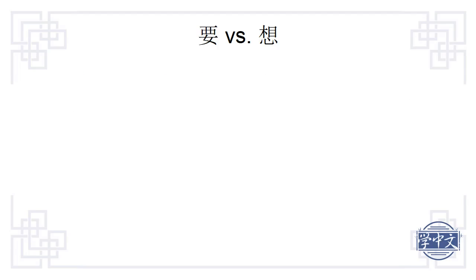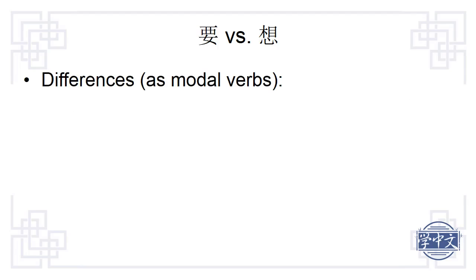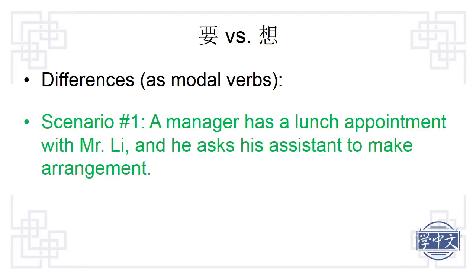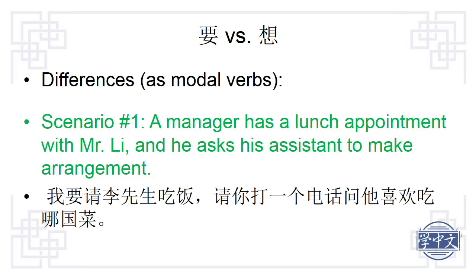Let's look at two different scenarios. Scenario number one: a manager has a lunch appointment with Mr. Li and asks his assistant to make arrangements. The manager says 我要请李先生吃饭，请你打一个电话问他喜欢吃哪国菜 — I am going to take Mr. Li out to eat. Please call him and ask what kind of food he likes. 要 implies that the lunch plan has been made; they only need to decide on the restaurant.